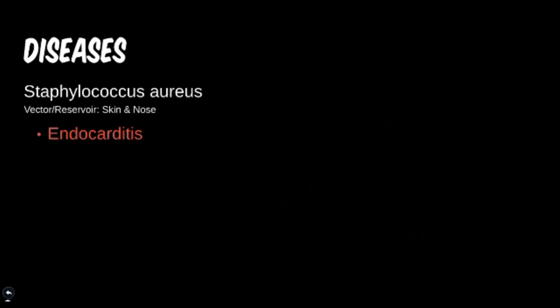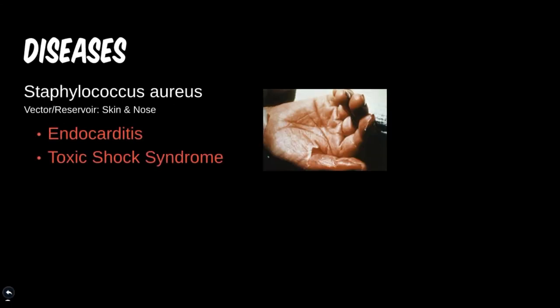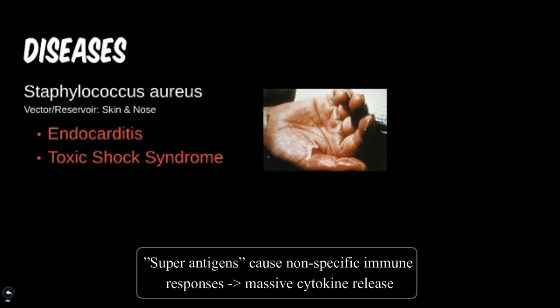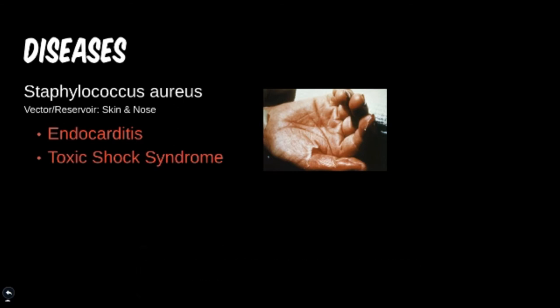Staph aureus can also cause toxic shock syndrome, one of the many skin pathologies from this infection. The skin basically looks like it is peeling off, resembling a very bad burn. It is caused by a particular toxin, which is a superantigen — protein A. This superantigen can cause fever, hypotension, and tachycardia. Since the skin is no longer there to protect you, it can lead to new infections from other bacteria on or around the skin.